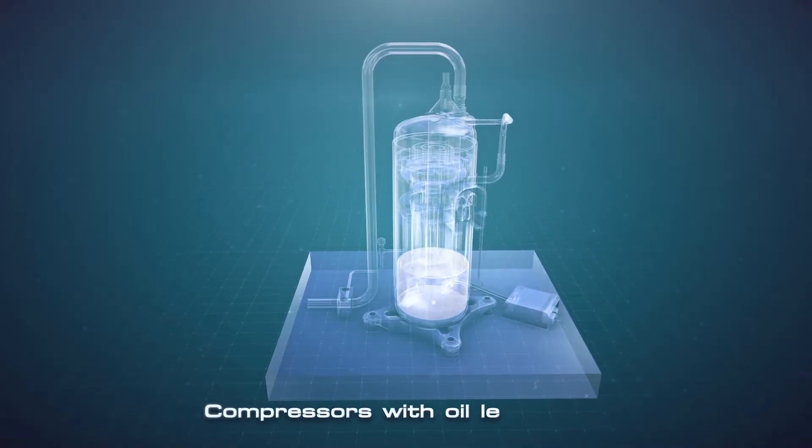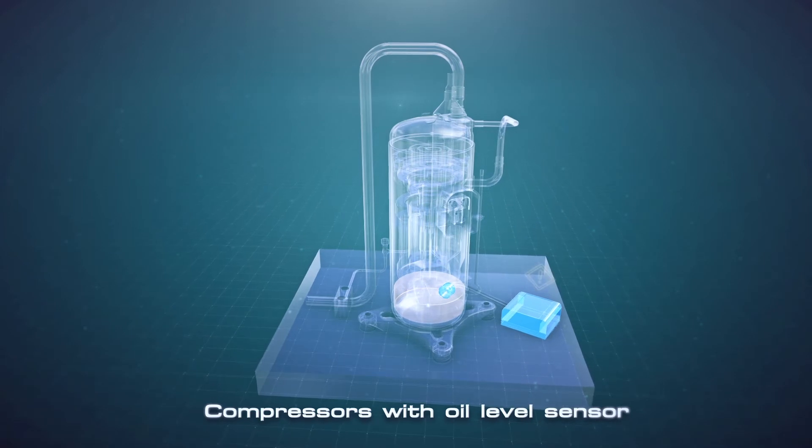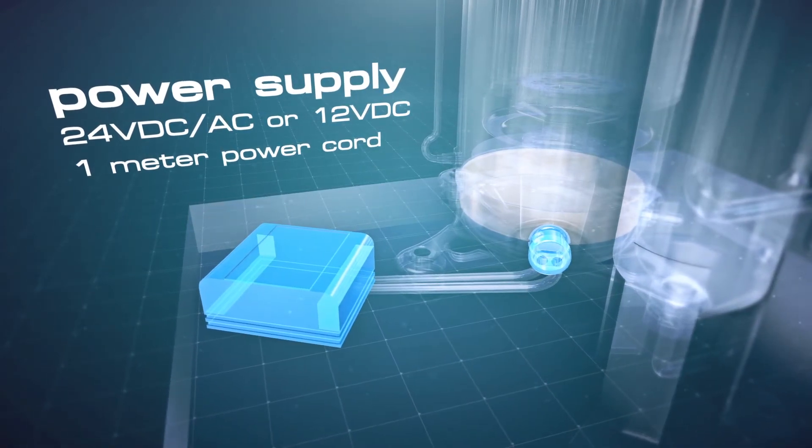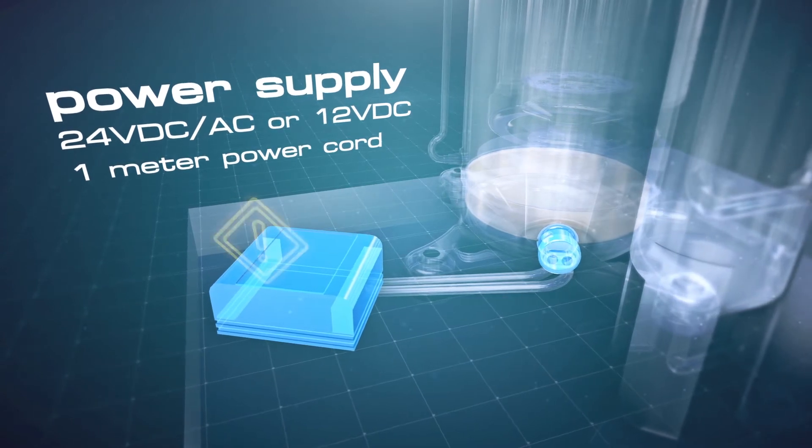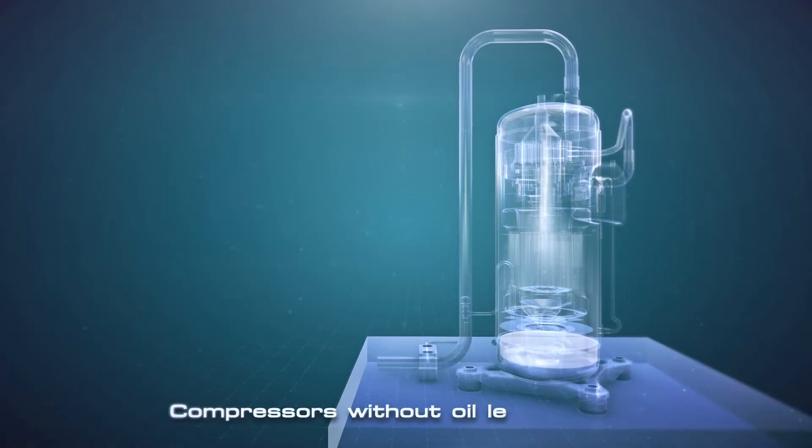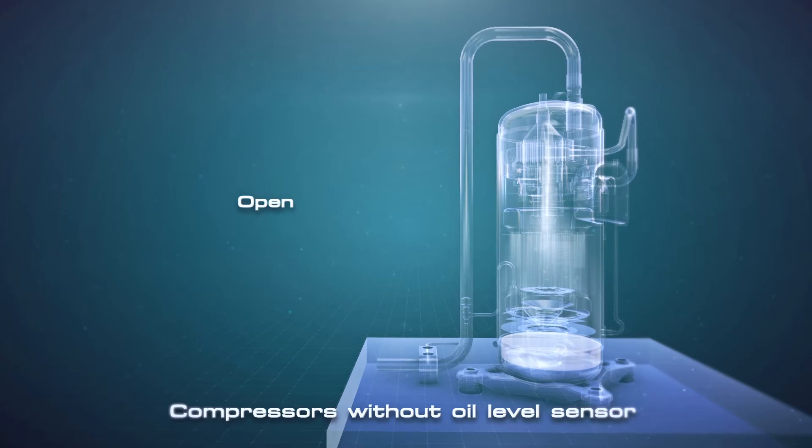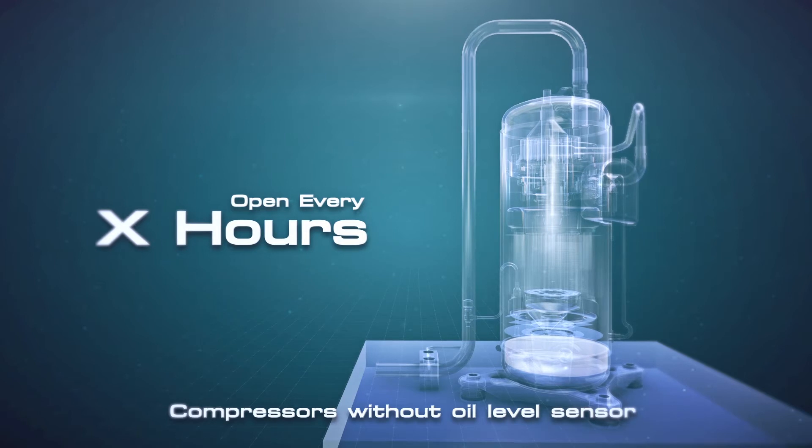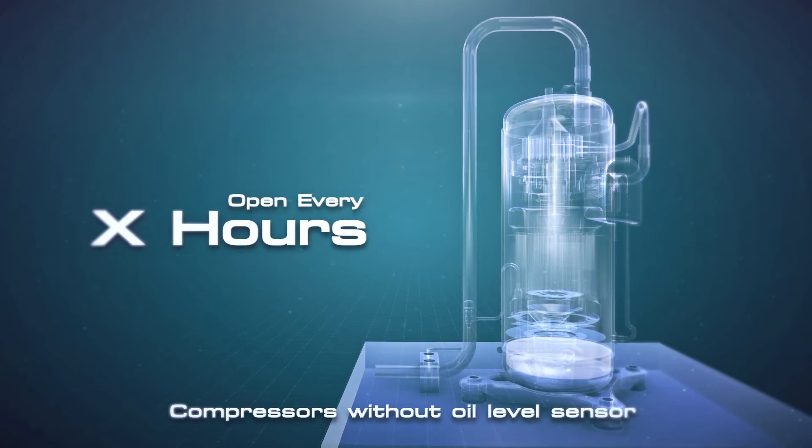Compressors with an oil level sensor are capable of automatically detecting minimum oil levels and regulating accordingly. For compressors without an oil level sensor, users have to schedule regulation process by experimentation to find out the appropriate timing.